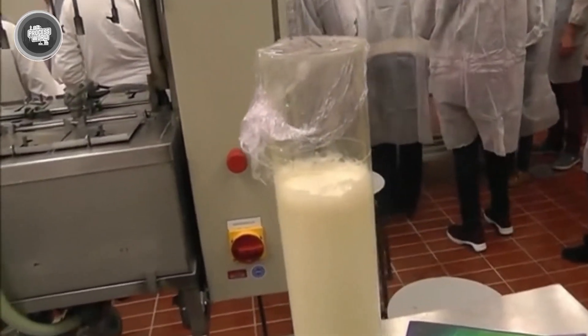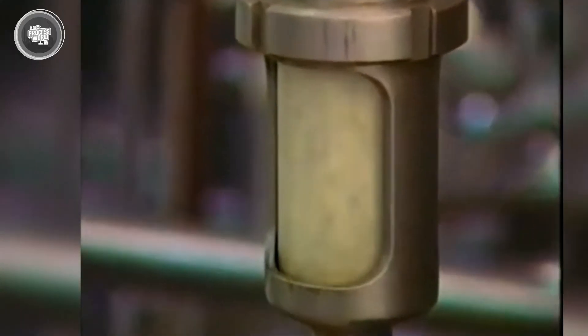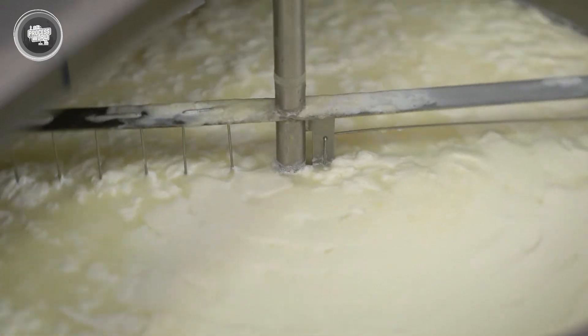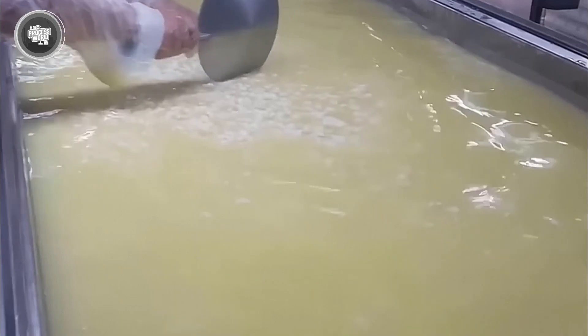Skimmed milk is the main ingredient for powdered milk production because it contains all the essential nutrients while being more stable for long-term storage. The separated cream doesn't go to waste. It's collected and sent for use in butter, cheese, and other dairy products. Once the milk has been fully skimmed, it's ready for the next major step, removing water to turn it into a concentrated form.